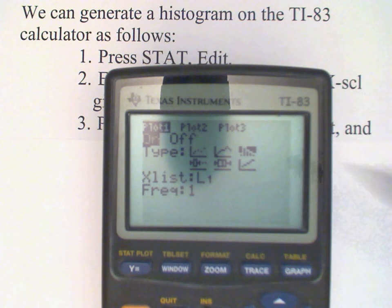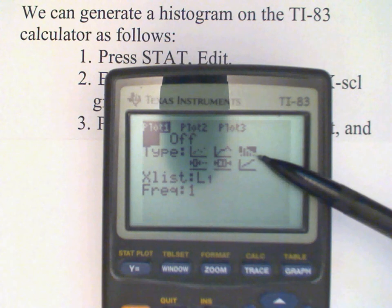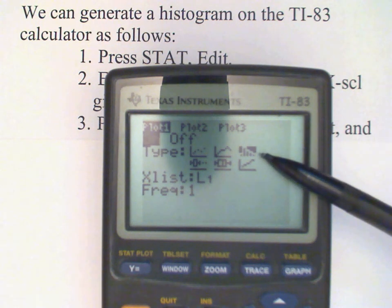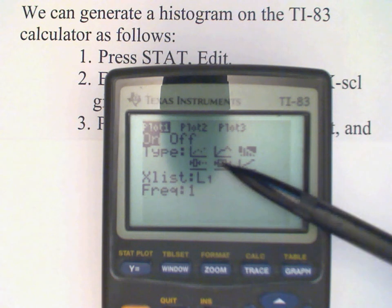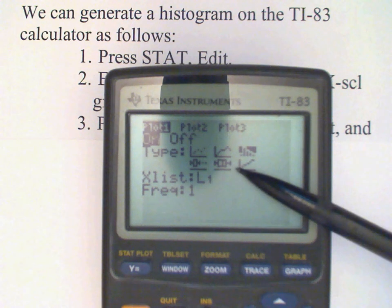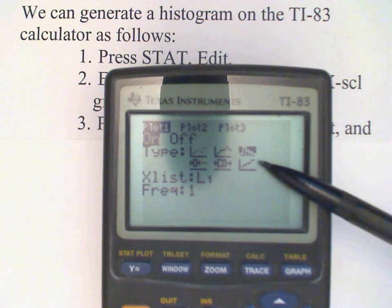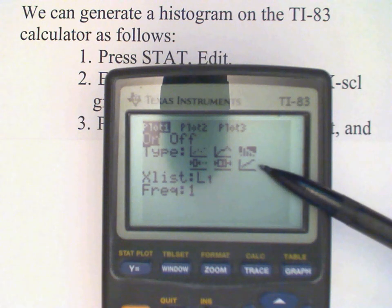And you see the histogram is already selected on this plot. Now it may be that on your calculator, you have a dot graph selected or a line graph. If that's the case, then you need to arrow over to the histogram here.